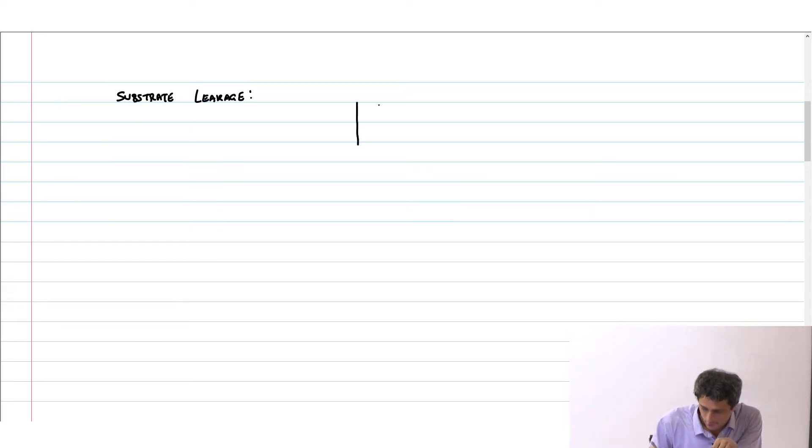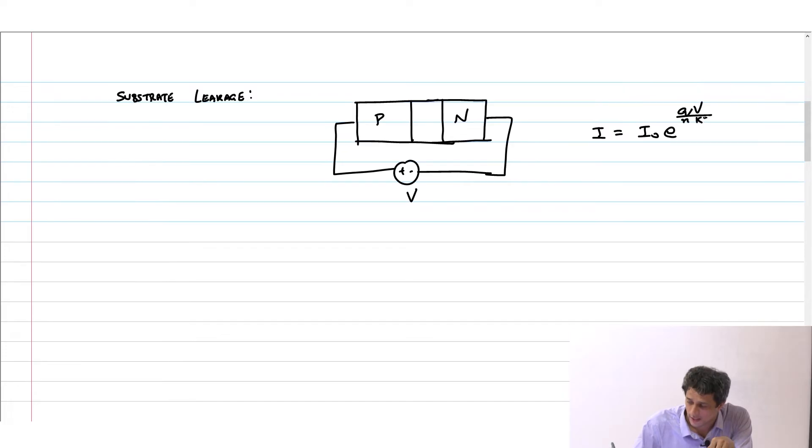Before we go into substrate leakage, if you have a simple PN junction, what happens? If you plot - this is P and this is N - and if I apply a voltage like this, the current through the PN junction is some I_0 e^(qV/nkT), similar to whatever we had for sub-threshold leakage.